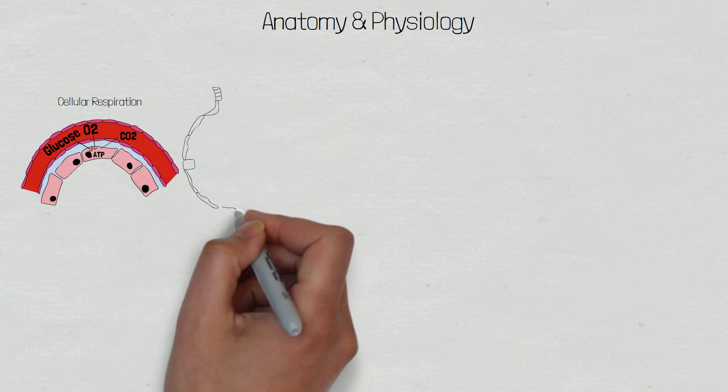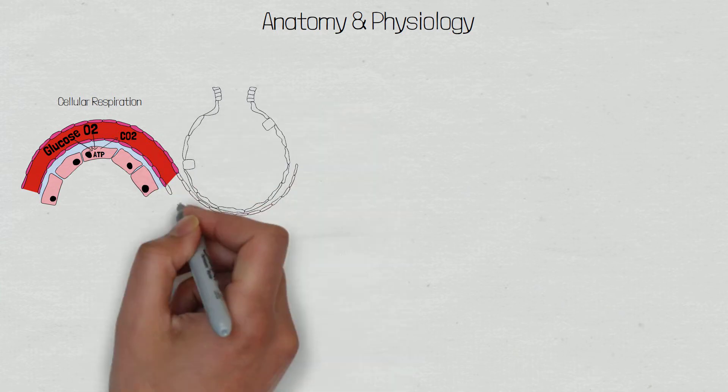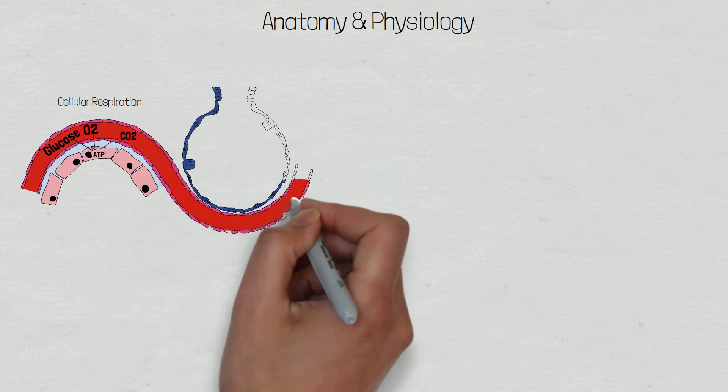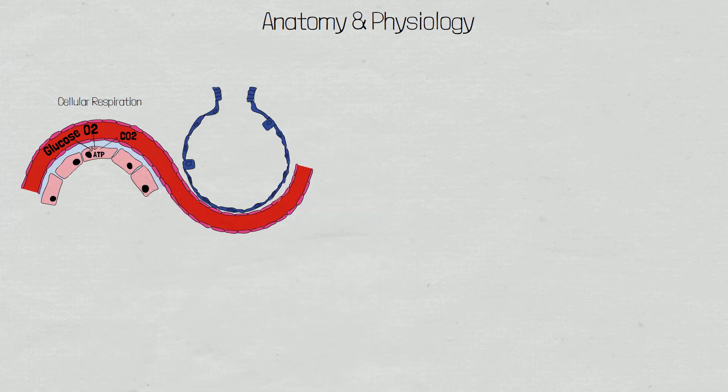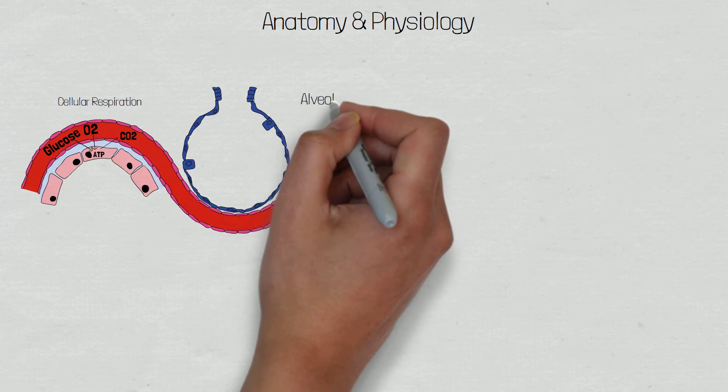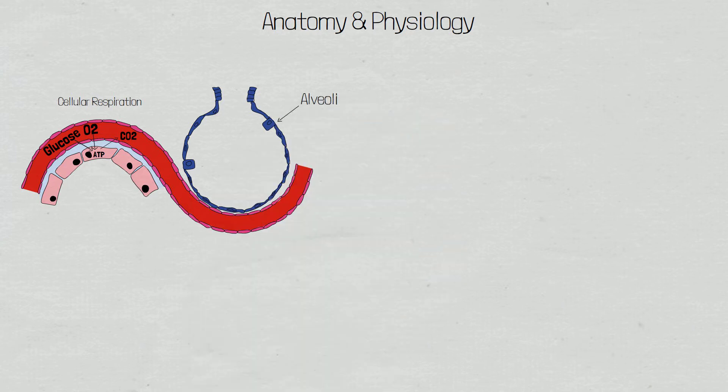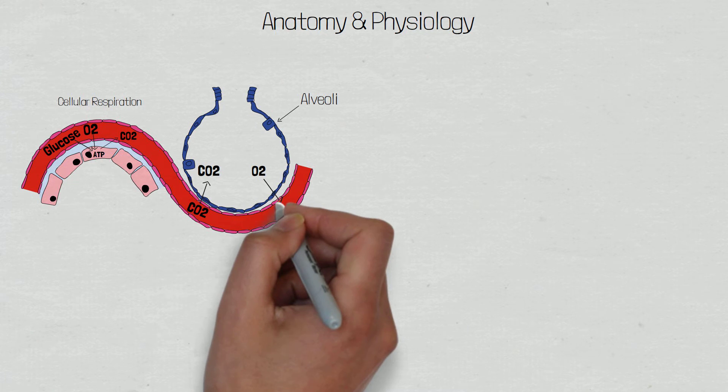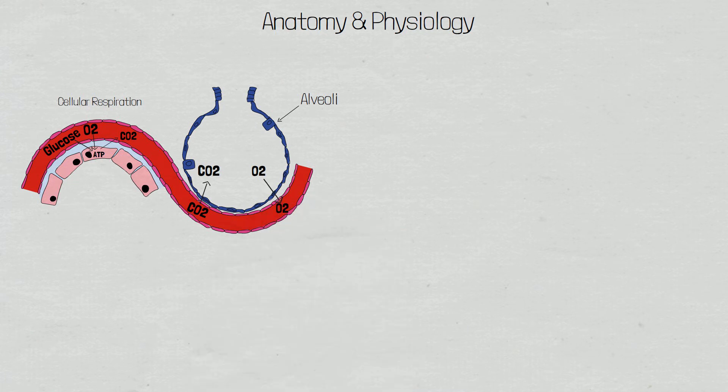This is achieved by the pulmonary system. Blood is pumped through the pulmonary circulation where diffusion of gases can take place within the alveoli. Alveoli are the functional aspects of the lung tissue responsible for gaseous exchange. Carbon dioxide moves down its concentration gradient into the alveoli, and oxygen moves down its concentration gradient from the alveoli and binds to hemoglobin.